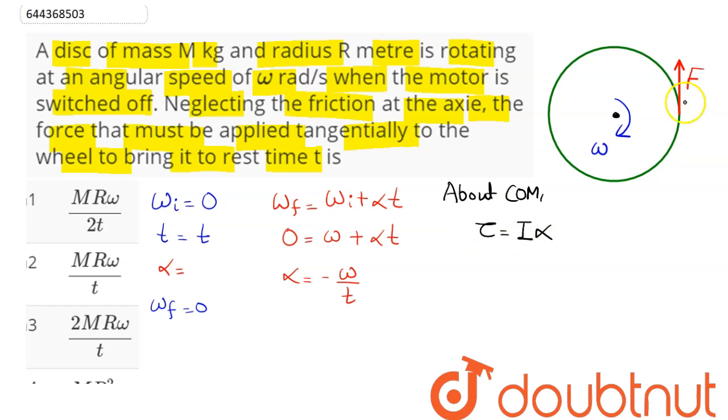Torque about the center of mass can be written as r cross F. Here, r vector and F vector are perpendicular to each other. Hence this comes as RF sin 90 degree and the direction is +k̂.